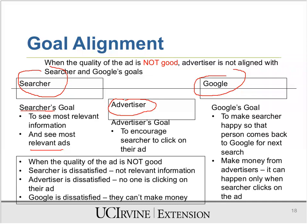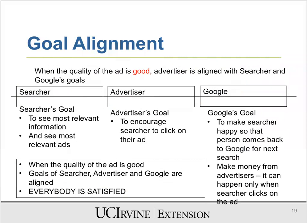The more people click on an ad, the less you pay to Google — this is related to CTR. When the advertiser's goals match those of the searcher and Google, everybody makes money and is happy. The searcher's goal is to see the most relevant information and ads. The advertiser's goal is to encourage searchers to click on their ad. Google's goal is to make money from advertisers. When the quality of an ad is good, the searcher, advertiser, and Google are all satisfied.